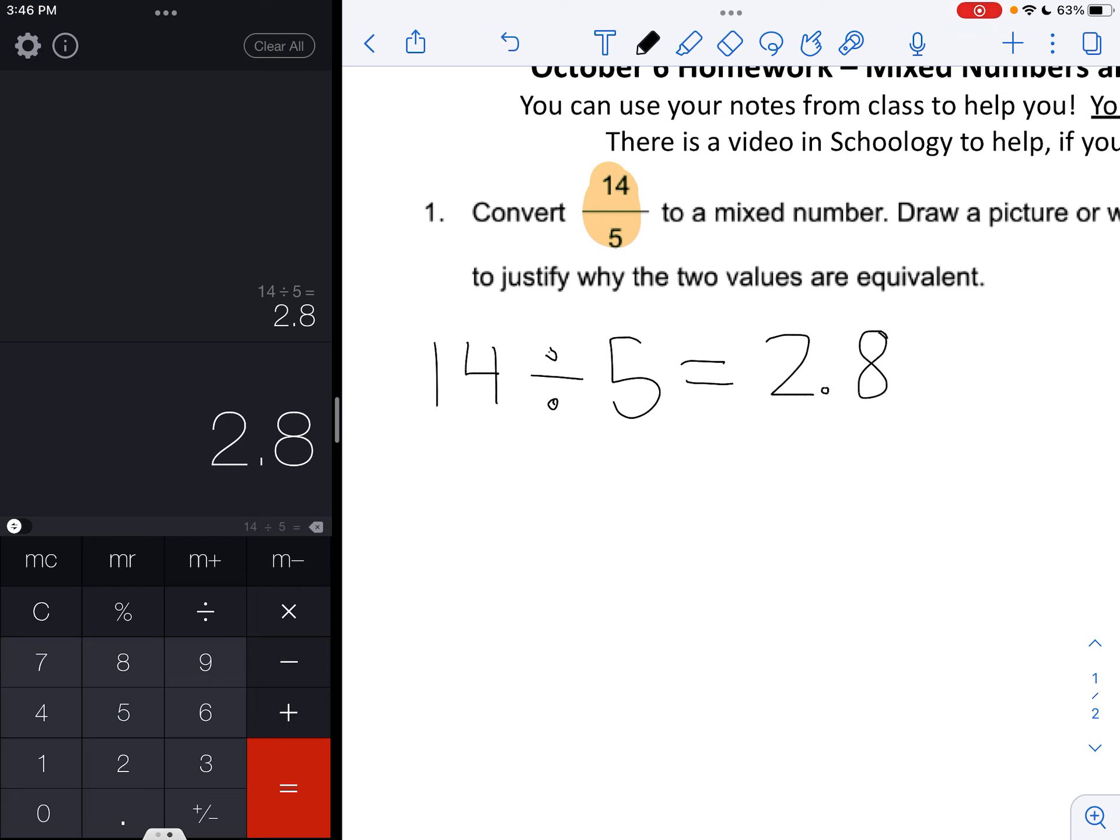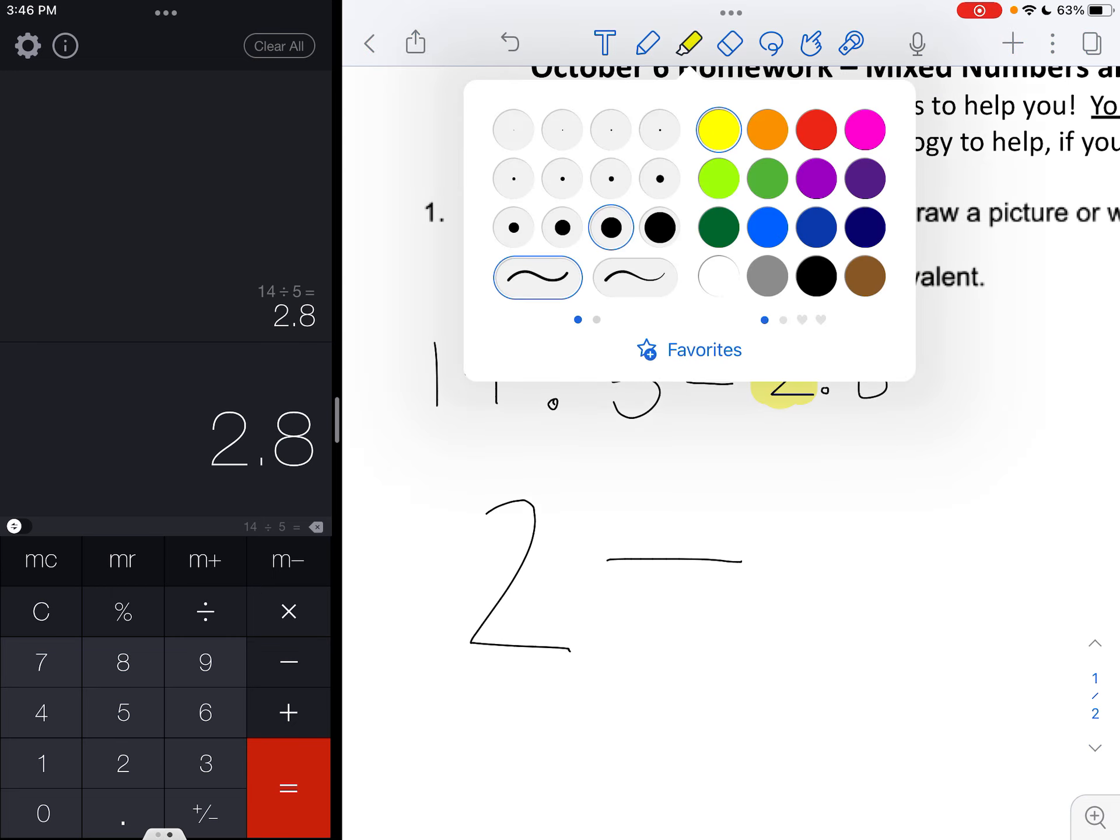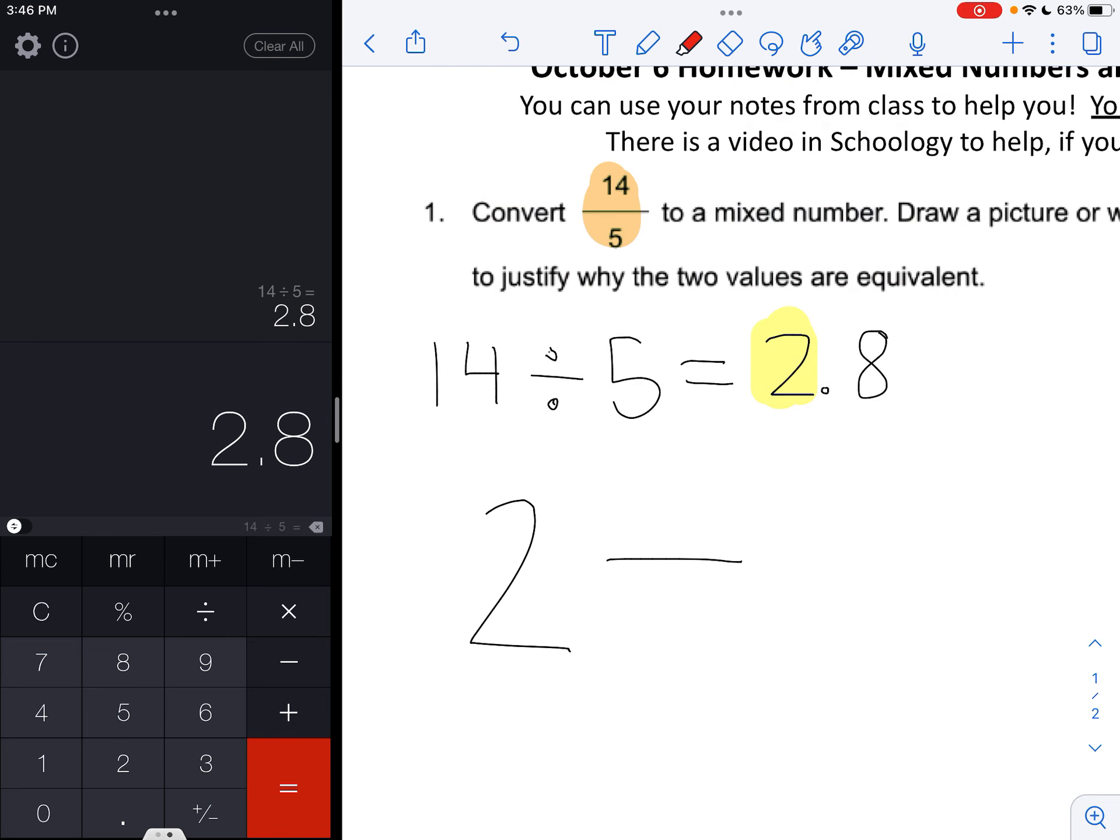We can write this entire decimal here, but the only number that we really care about right now is this whole number 2 out in front. So in the mixed number that we're going to get, the whole number is going to be 2. Then we draw our fraction line, and we remember that in the MAD shortcut that we talked about, the denominator will stay the same. So the denominator that we have right now in this improper fraction is 5, so we know that the denominator for our mixed number should also be 5.